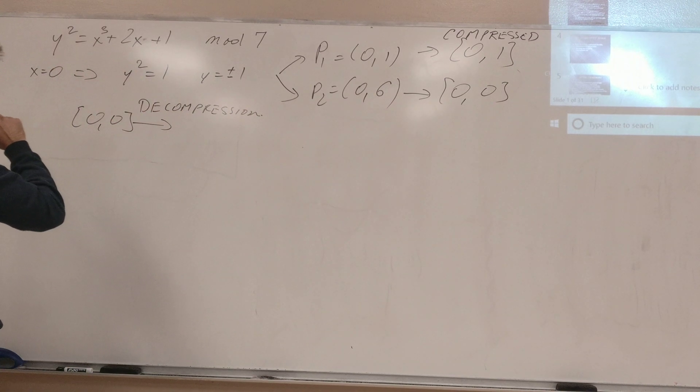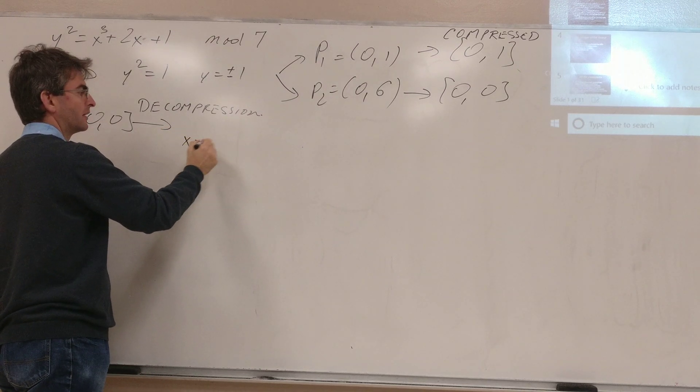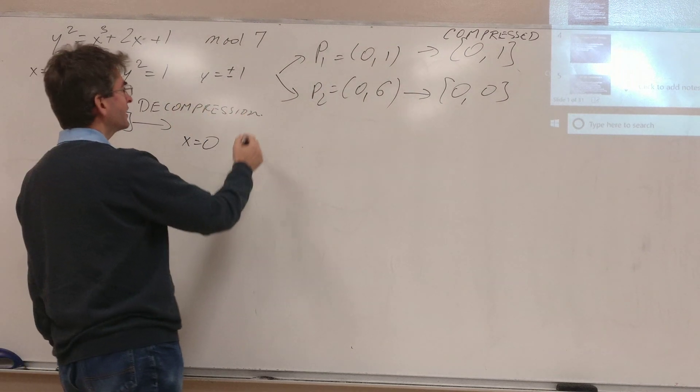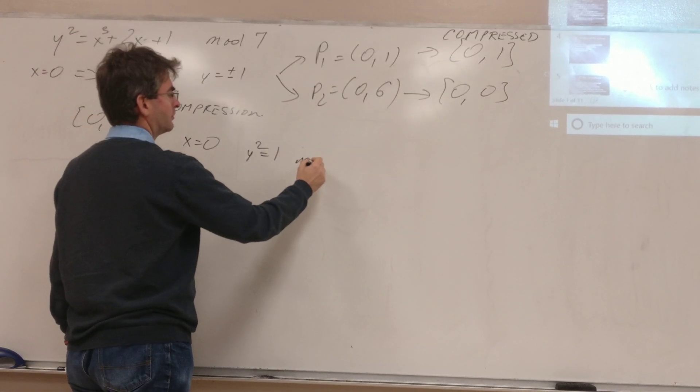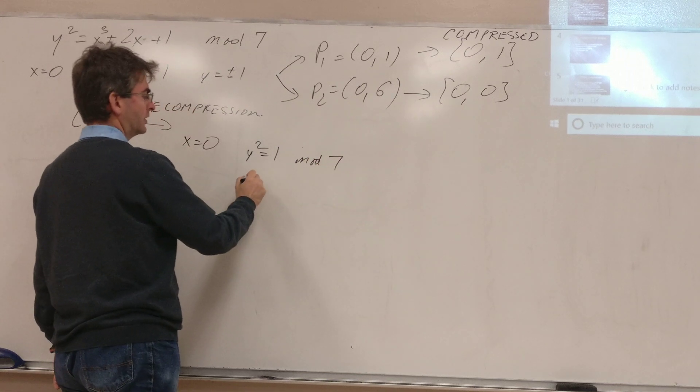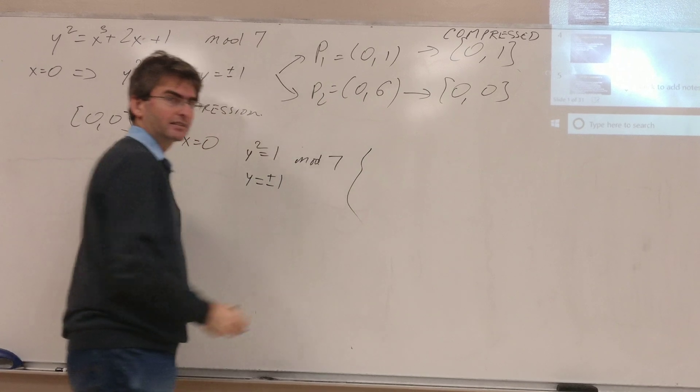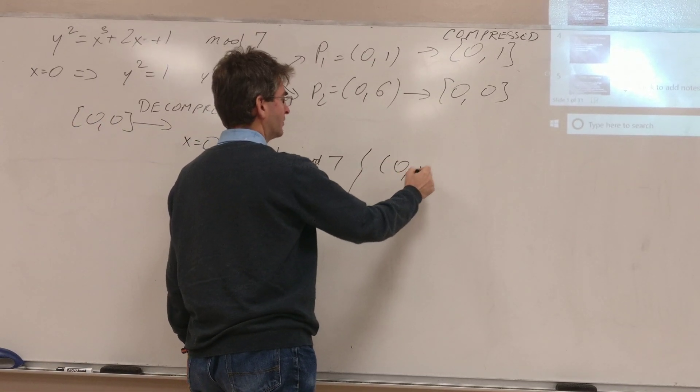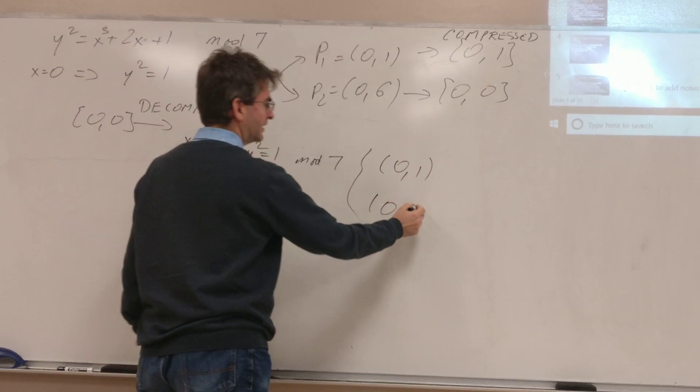So how do you do that? You take x equals 0 again and compute the possible values of y. So you say y squared equals 1 mod 7, therefore y equals plus or minus 1. So you have two possible points, namely (0,1) and (0, minus 1), which is (0,6).